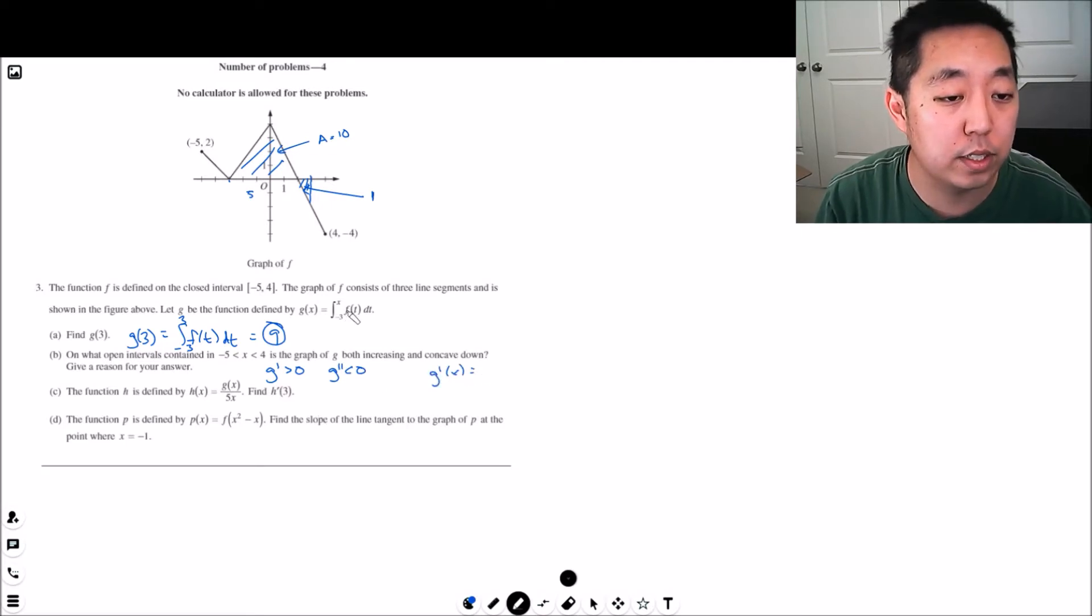G prime of x is the derivative of this. Well by fundamental theorem of calculus that's f of x. So when is f of x greater than zero? f of x is greater than zero when f is above here. This happens between negative five and negative three as well as negative three to two.